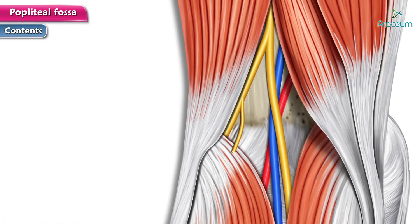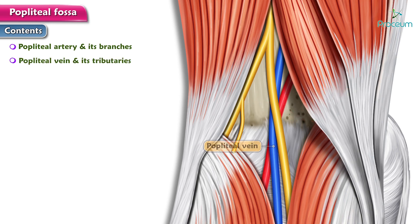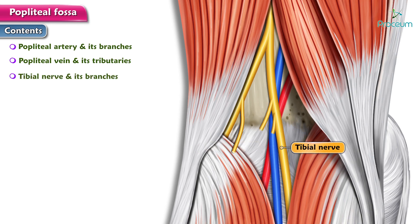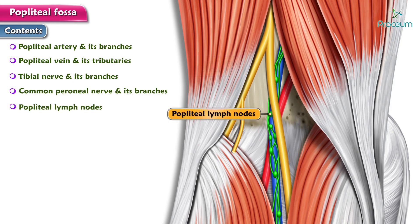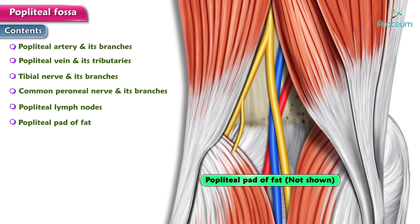Contents. The main contents of the popliteal fossa are the popliteal artery and its branches, the popliteal vein and its tributaries, the tibial nerve and its branches, the common peroneal nerve and its branches, the popliteal lymph nodes, and the popliteal pad of fat.